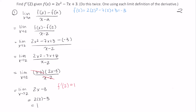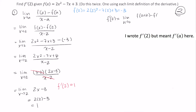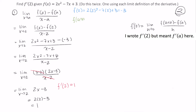Now let's do this with the other definition. The second definition for f prime of 2 is the limit as h approaches 0 of f of a plus h minus f of a divided by h. We already know what f of 2 is. For f of a plus h: f of a plus h equals 2 times a plus h squared minus 7 times a plus h plus 3, which simplifies to 2a plus h minus 3.